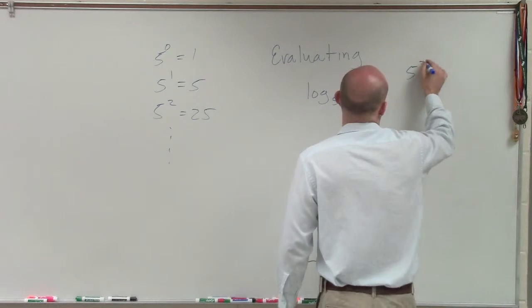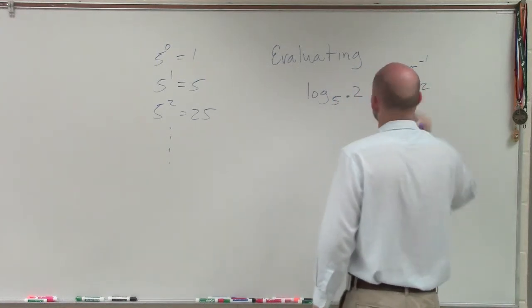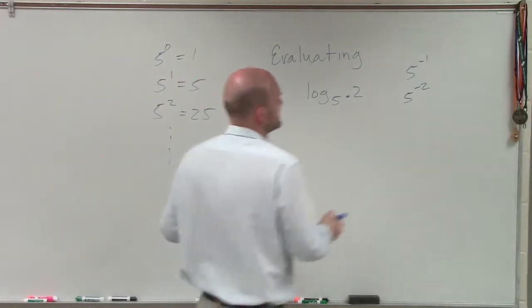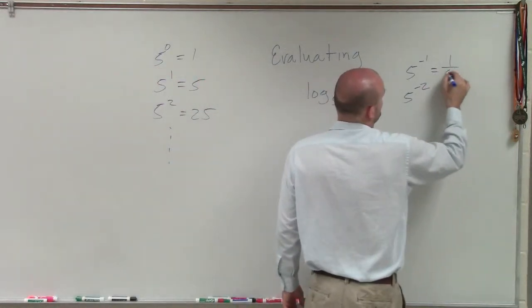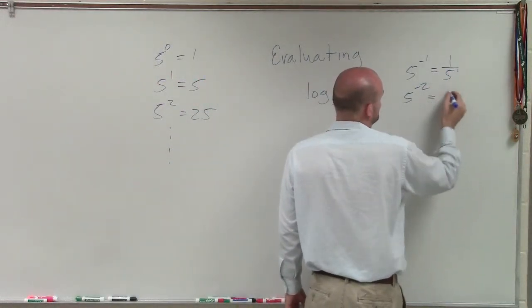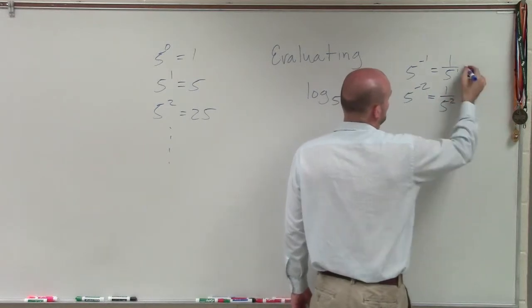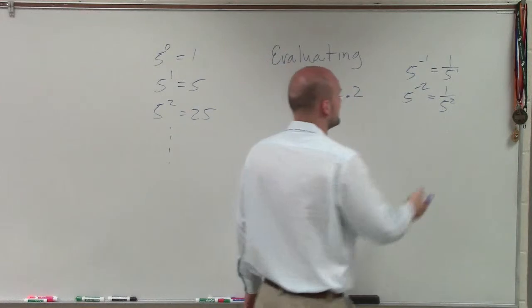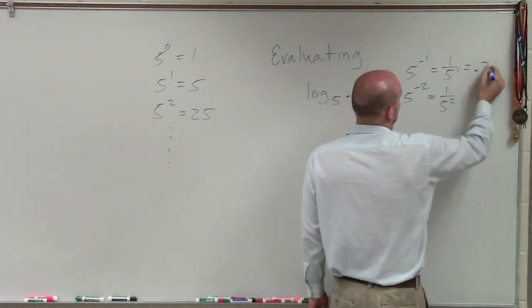So how about I do 5 to the negative first, 5 to the negative second. Now remember, when you're taking a number raised to a negative power, what that does is just rewrites it as the reciprocal of 1 over 5 to the first, 1 over 5 squared. So 1 over 5, if you convert that to decimal form, equals 0.2.